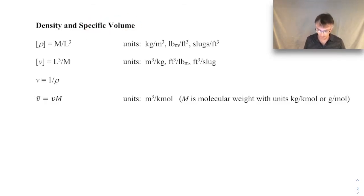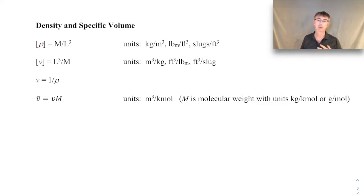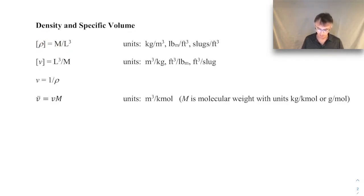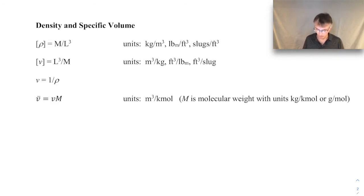Pretty much everyone is familiar with density. The dimensions of density — where square brackets mean 'dimensions of' and rho represents density — are mass per length cubed, or mass per volume. Density describes a physical quantity of mass per unit volume, and a volume is like a length cubed. The corresponding units are kilograms per cubic meter: a kilogram is a mass and a cubic meter is a cubic length. We'll frequently use kilograms per cubic meter when talking about density.